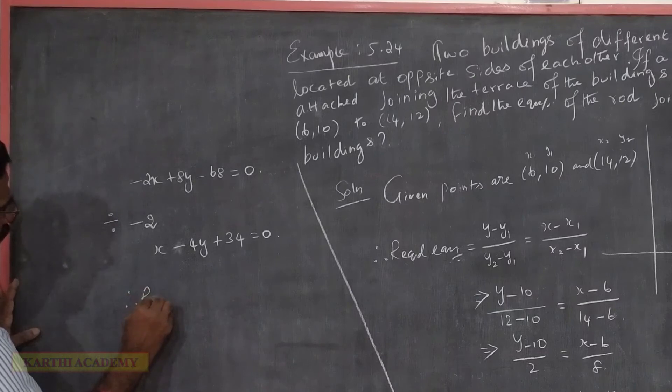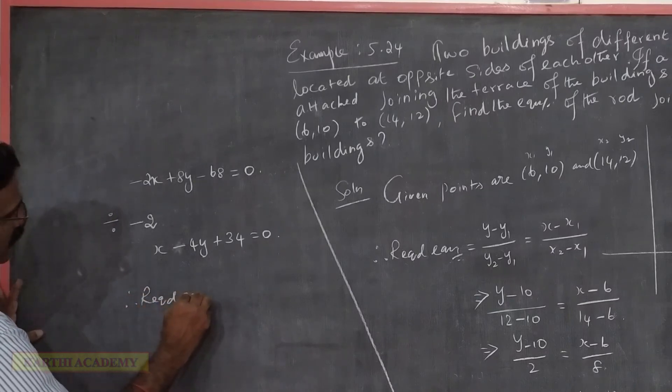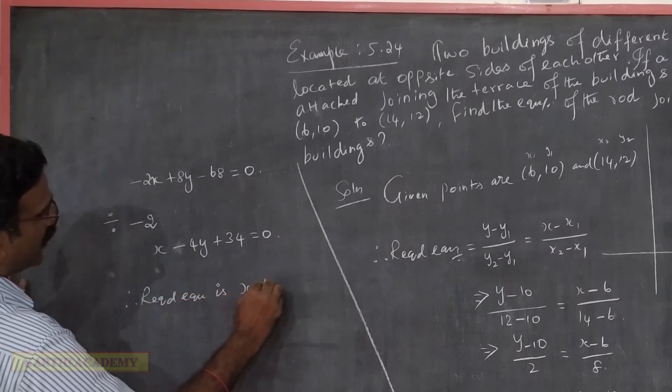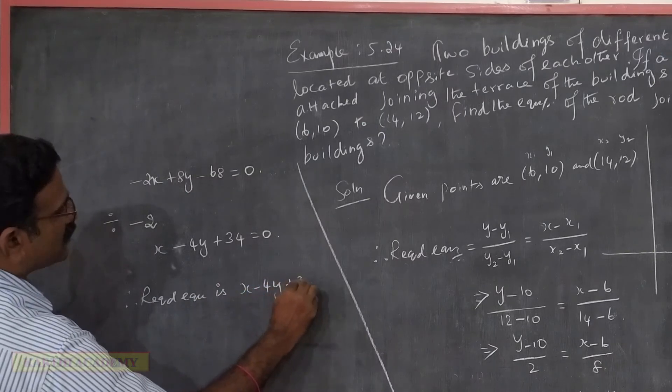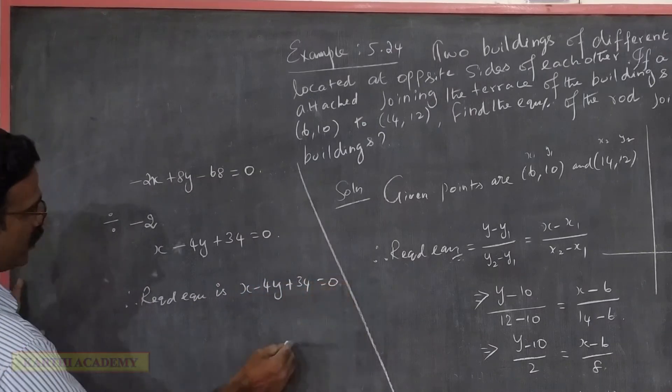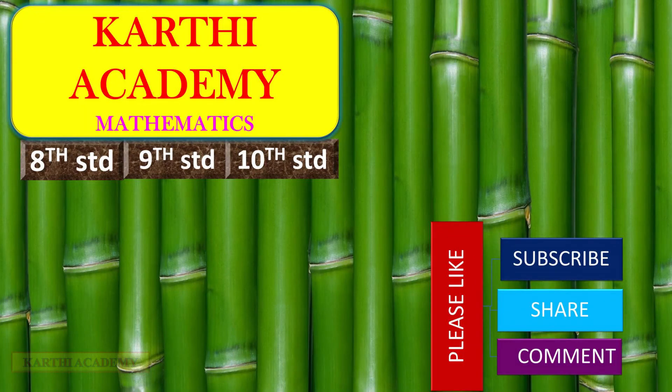Therefore, the required equation is x minus 4y plus 34 equals 0. Thank you.